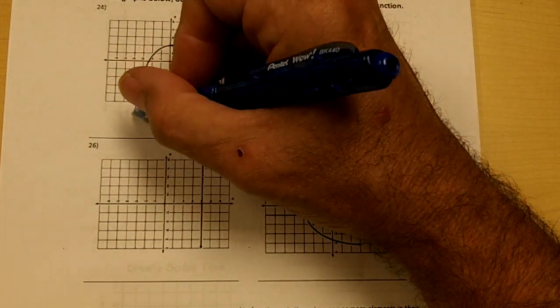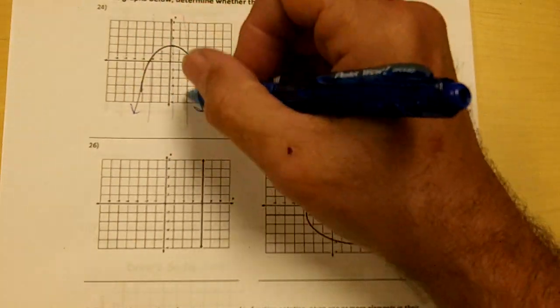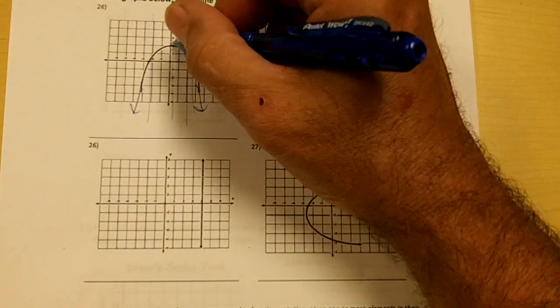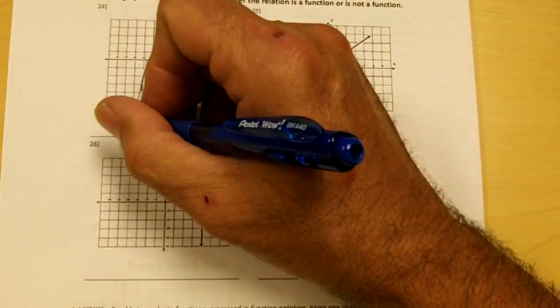Remember, these lines keep going. So on this one, you do the vertical line test. Every vertical line crosses the graph once, so this is a function.